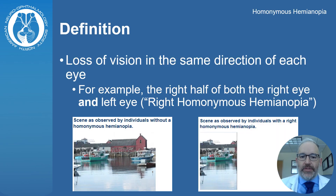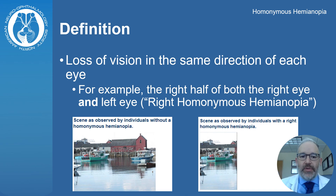Homonymous hemianopia is a problem where there is a loss of vision or absence of vision towards one side of the visual world in each eye. For example, a right homonymous hemianopia would be a loss of vision to the right side of vision in both the right and the left eye, as depicted in these images.